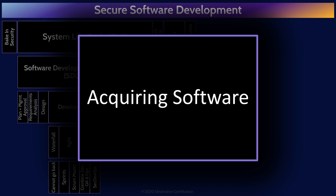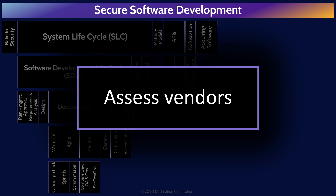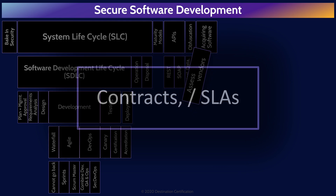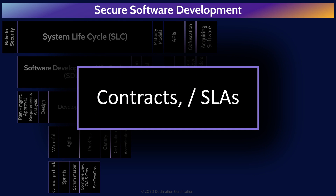If an organization is acquiring code by contracting an organization to write custom code or buying an off-the-shelf product, the organization needs to conduct software assurance activities to ensure the code is free from vulnerabilities and functions as intended. An important part of this process is assessing the vendor to ensure they use secure software development techniques and sufficiently test their code. Contracts and SLAs are another important tool to define the controls a vendor must have in place and measure the effectiveness of these controls through metrics and reports.